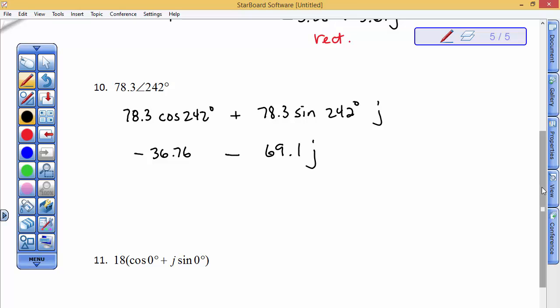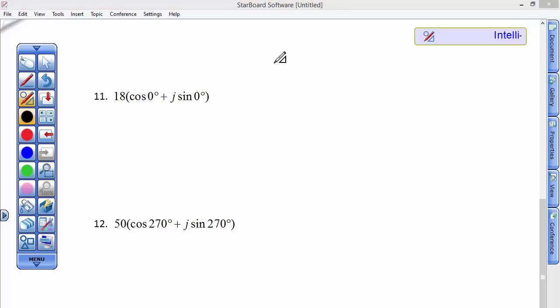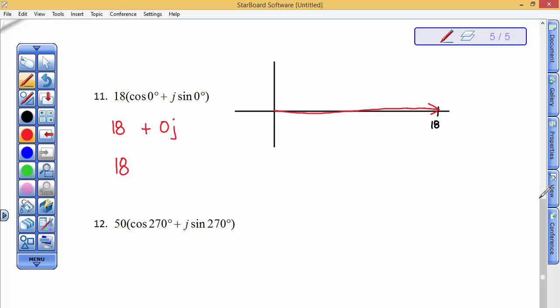Alright, so what happens if the angle is just at 0 degrees? Well, something that's 18 units long and is at 0 degrees is way out here. And so, here is that vector, and it just has 18 as the real part, and then 0 times j as the imaginary part, so you could just write it as 18. So, be careful.